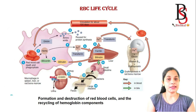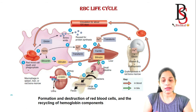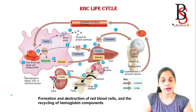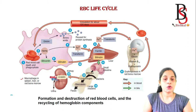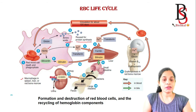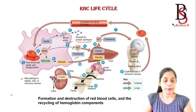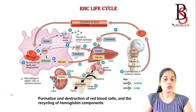In the RBC life cycle, worn-out red blood cells are phagocytized by macrophages in the spleen, liver, and red bone marrow. The red blood cell splits apart into heme and globin. The globin is broken down into amino acids used for protein synthesis. From the heme molecule, the iron is separated and in the bloodstream combines with the plasma protein transferrin.